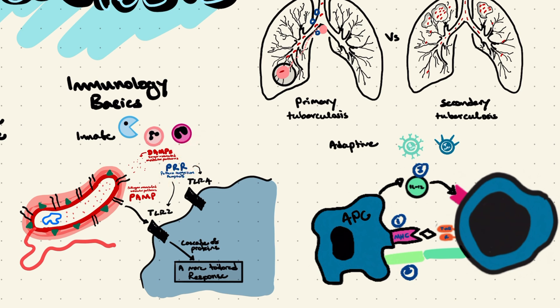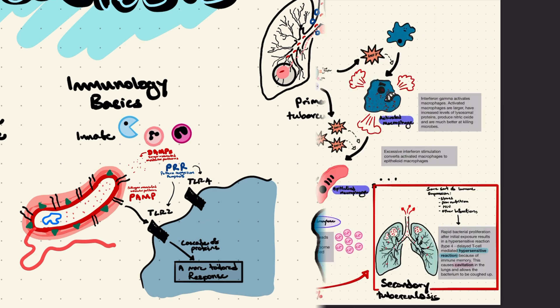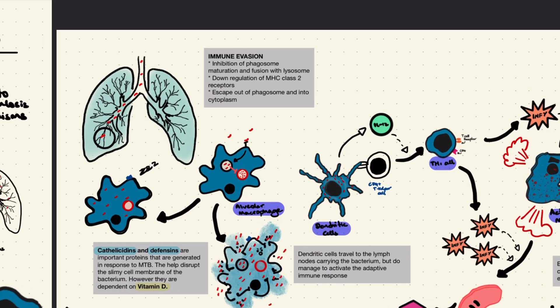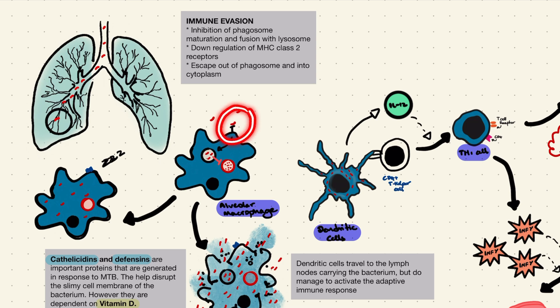These are the notes I'll be using for this video, and as usual you can find them in the description below — just don't forget to like and subscribe. Upon exposure to Mycobacterium tuberculosis, alveolar macrophages detect PAMPs on the bacterium using toll-like receptors 2 and 4, and then engulf the bacterium.